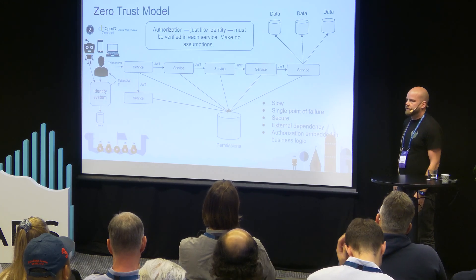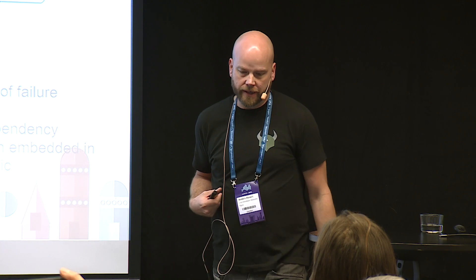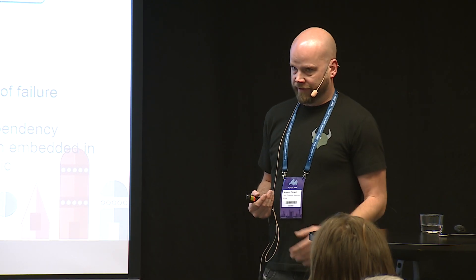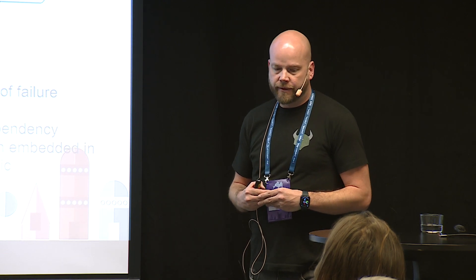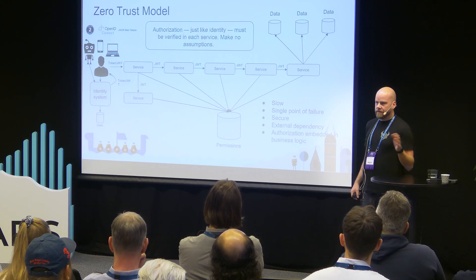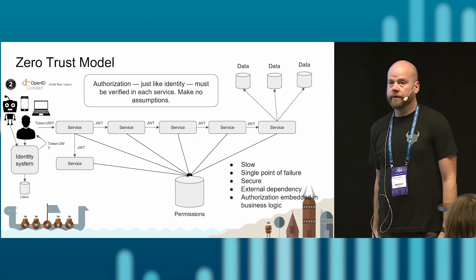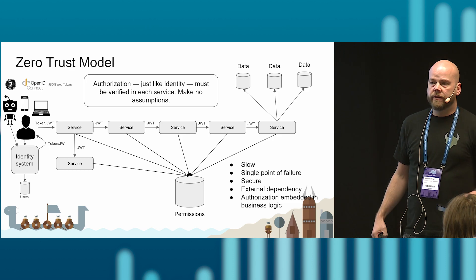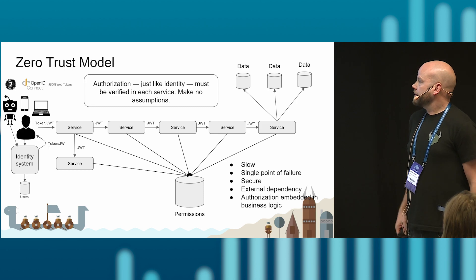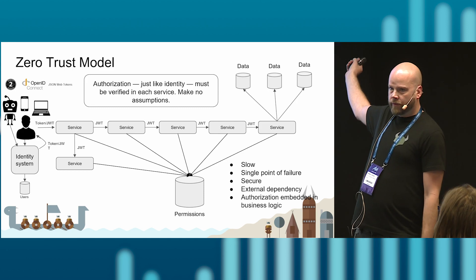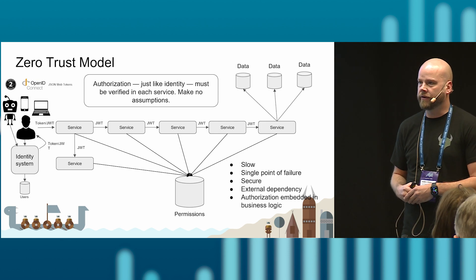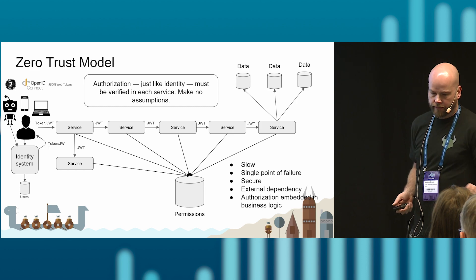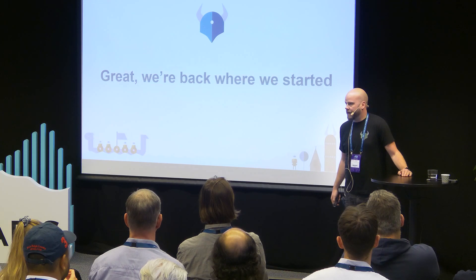For the last five to ten years, a competing model has become more popular. With increased requirements like GDPR and banking-grade security, we're basically all required to do more than what the gateway model provides. The zero trust model says authorization and identity need to be controlled everywhere — we can't trust other entities to have done this before us. With JSON Web Tokens we know the identity, and by having each service make its own lookup, we're compliant with zero trust since there's no implied trust.